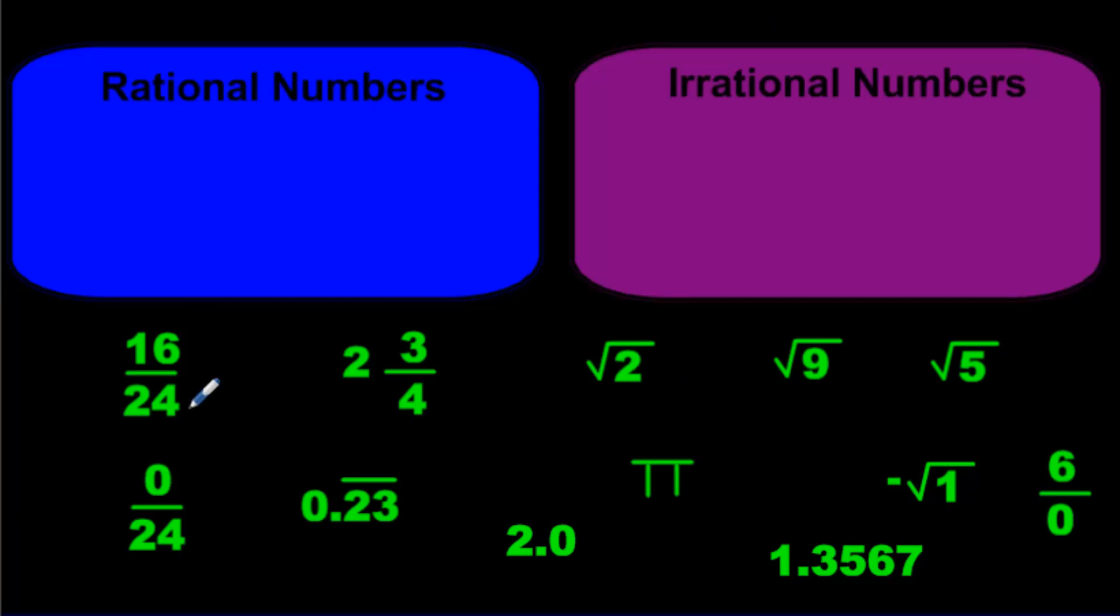Here's an activity for you to do. Look at all of these expressions and sort them according to rational or irrational. Let's start doing this. 16 out of 24. It's a fraction, so it's a rational expression. We can include it here.